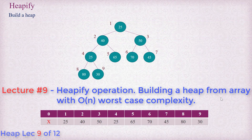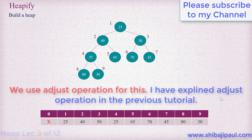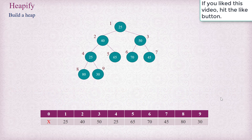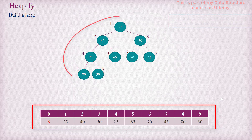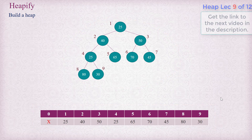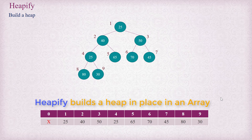Hello and welcome back. In this tutorial, I am going to explain how we can build a max heap from a given integer array. The procedure is popularly known as the heapify operation. I have taken an example array with nine elements that you can see at the bottom of the screen. The corresponding almost complete binary tree representation is also visible. This is an arbitrary array and definitely not a heap. We are going to build a heap in place using this heapify operation.